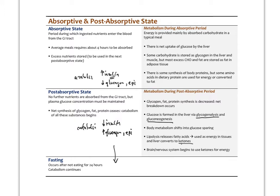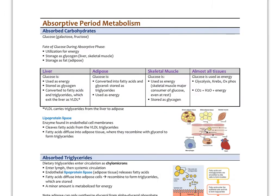In the absorptive period, absorbed carbohydrates are primarily glucose. Galactose and fructose are converted to glucose in the liver. Glucose can be used for energy, stored as glycogen in the liver or skeletal muscle — and also in cardiac muscle — or stored as fat if not needed for the first two uses, which happens in the liver and adipose tissue.